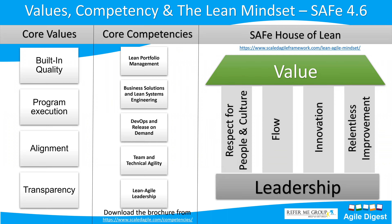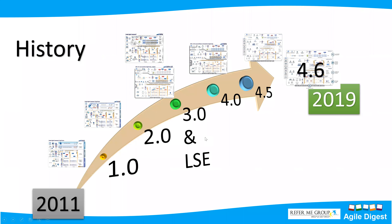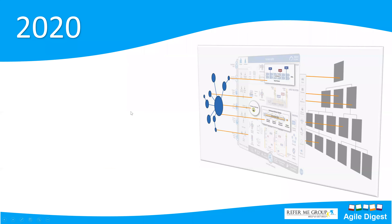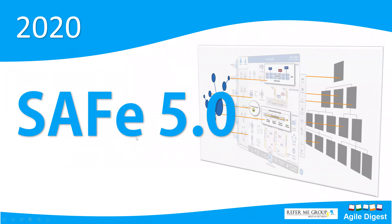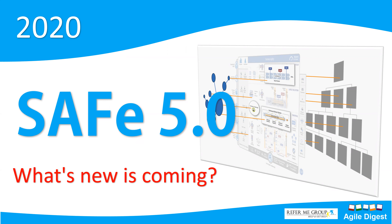Here is the history of scaled agile: it started in 2011, then versions 1.0 and 2.0 came, with lots of modifications. The modifications happen because SAFe itself practices inspect and adapt — they continuously adapt best practices to fit the dynamic industry. As of 2019, the latest version was 4.6. From January 2020 onwards, there's a new version: SAFe 5.0.